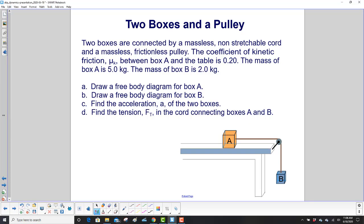Two boxes are connected by a massless, non-stretchable cord and a massless, frictionless pulley. The coefficient of kinetic friction between box A and the table is 0.20, which tells you we're going to deal with friction here. The mass of box A is 5 kilograms, the mass of box B is 2 kilograms.